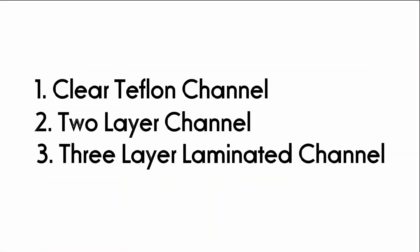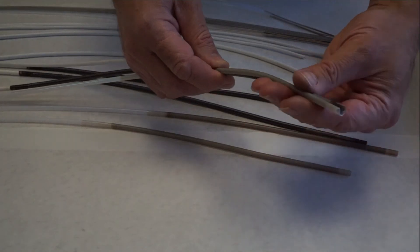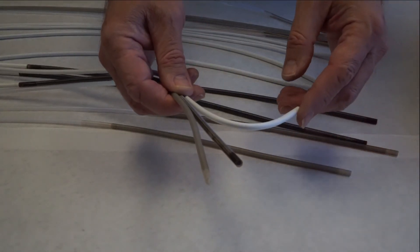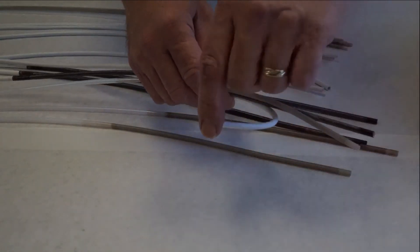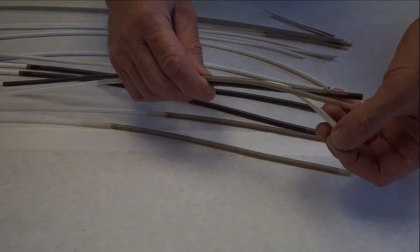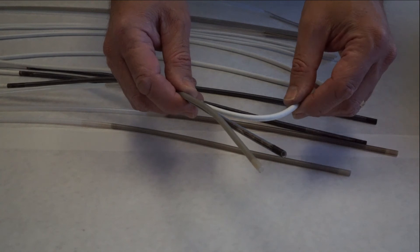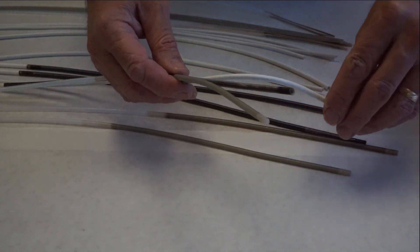Our three layer laminated channel is recommended for newer 190 model scopes purely for the flexibility required in newer scope models. Some can also be used in 180 models as well given the advanced skill level on part of the technician.